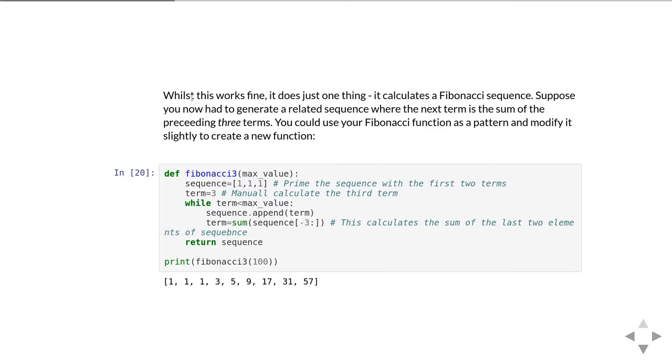We can call that again up to a maximum term of 100 and print the result. You see you get a sequence which is indeed the sum of the last three terms in the sequence. Because you're adding three terms at a time, it reaches the point at which the next term would be more than 100 much more quickly.